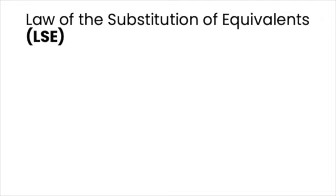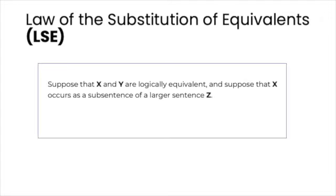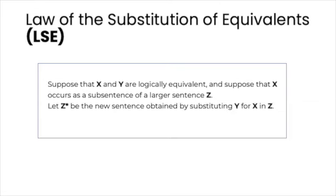Taylor calls this the law of the substitution of equivalence, or LSE for short. This is how he states the rule. Suppose that X and Y are logically equivalent. And suppose that X occurs as a sub-sentence of a larger sentence Z. Let Z-star be the new sentence obtained by substituting Y for X in Z. Then Z is logically equivalent to Z-star.